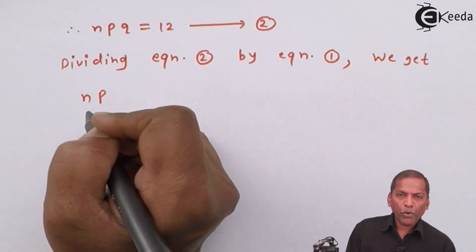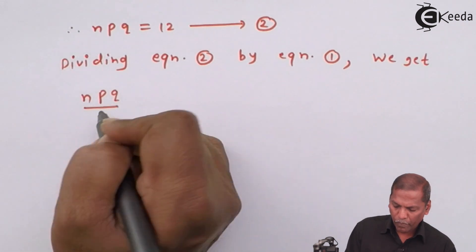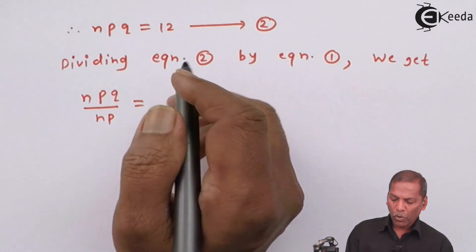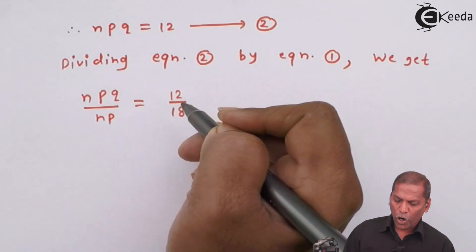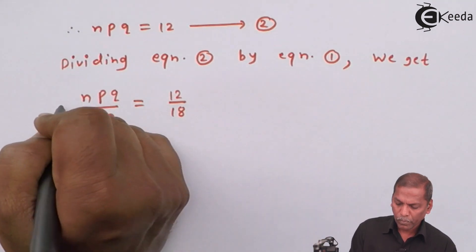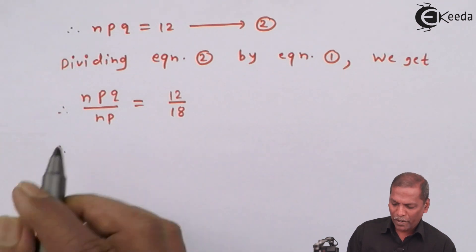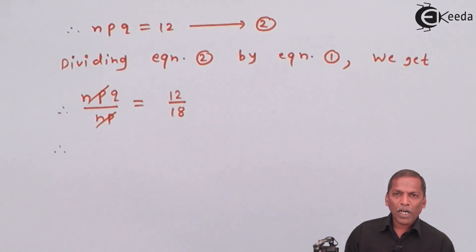npq upon np is equal to 12 upon 18. From this, we cancel np from numerator and denominator. So we get q equal to.